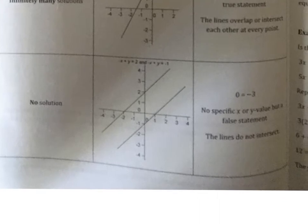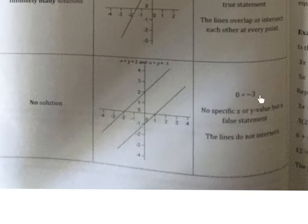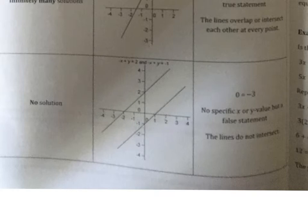The third option is no solution. No solution means the two lines do not intersect anywhere. What kind of lines don't intersect? Parallel lines. So if there's no solution, that means the lines are parallel and they will never intersect. When you use substitution or elimination, you'll get some kind of false statement, like 0 equals negative 3, or 2 equals 5, or 12 equals 1 — a false statement that tells you the lines never intersect and there's no solution.